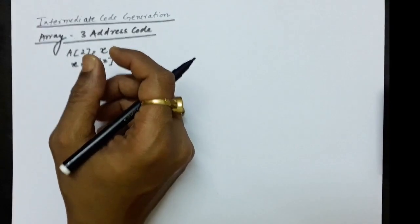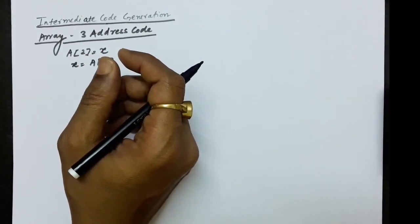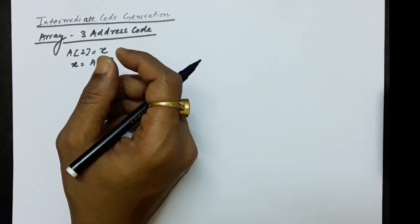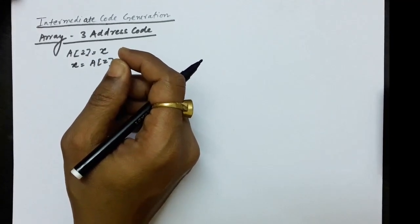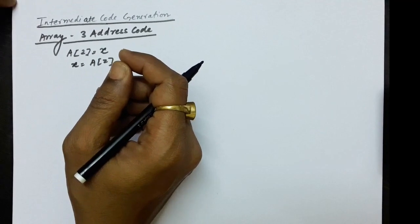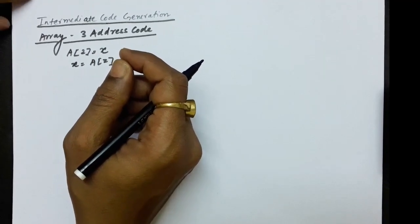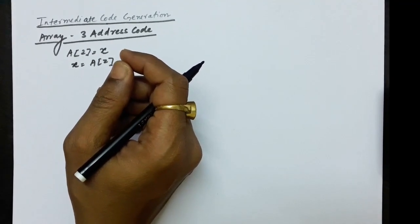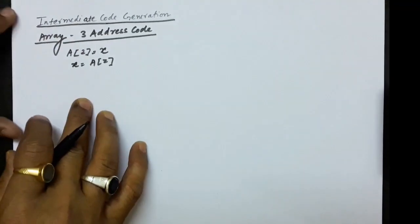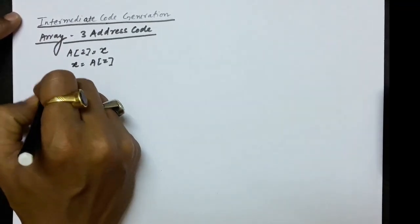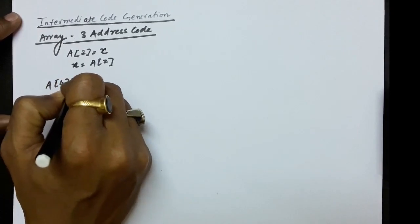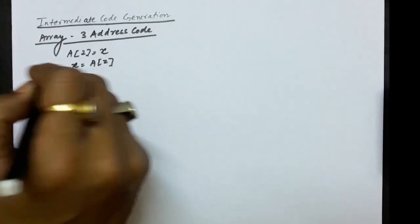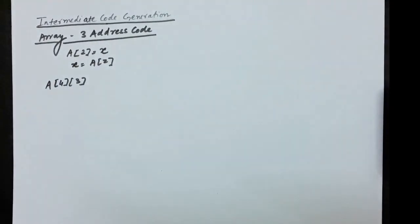But three-address code does not allow the 2D array or 3D array kind of thing directly. So in case we have a 2D array, we will have to convert that to a 1D array before writing it through the three-address code. Now let's say we have an array of kind a[4][3].